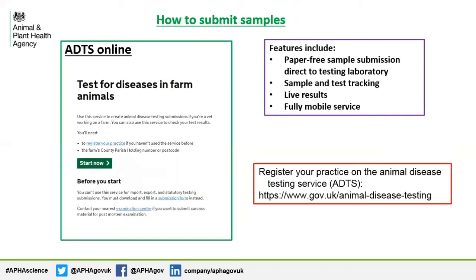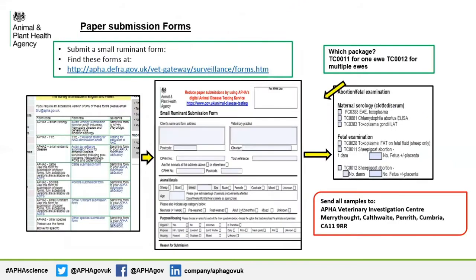There are two ways to submit samples for ovine abortion investigations. You can use our online submission service called ADTS, allowing live results and sample tracking — simply search for ADTS submission online to set your practice up on this system. There is a separate webinar on this service within this series. The second option is to download a submission form and post samples the traditional way; however, with this method you will not be able to track your sample's progress. Regardless of which method you use, all samples must be sent to our Penrith Centre, the address for which can be seen on this slide.